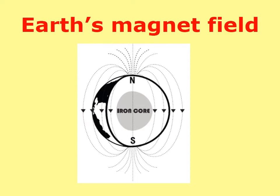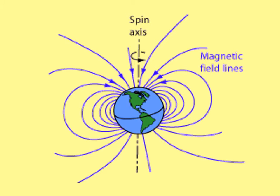Earth's magnet: the largest magnet ever is Earth. Earth has two magnetic poles, which are the north pole and the south pole. So Earth is the largest magnet. Earth spins on its axis because of its magnetic poles and its magnetic lines.